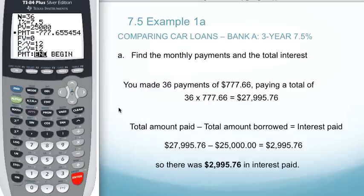Let's find our total payments and then we can calculate our interest. We've made 36 payments of $777.66, paying a total of $27,995.76. Taking that amount and subtracting off the amount we borrowed, we end up with a total interest paid of $2,995.76.